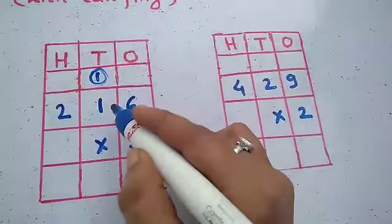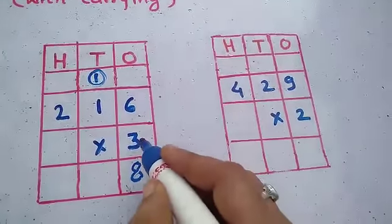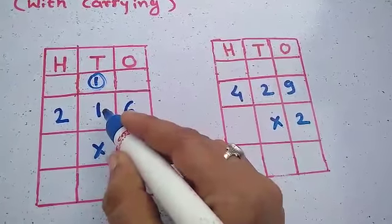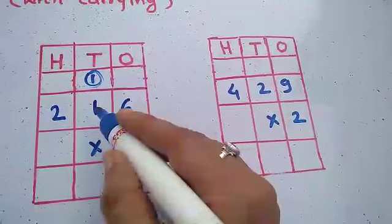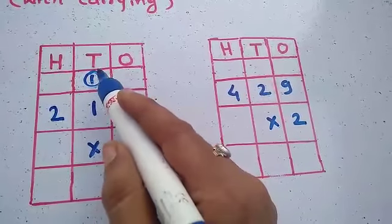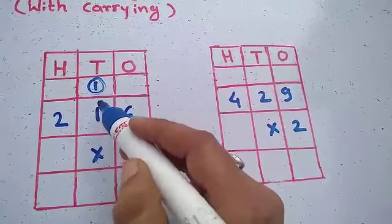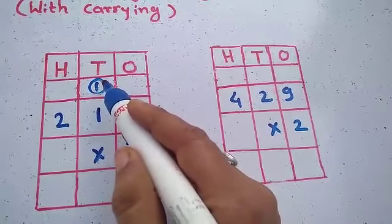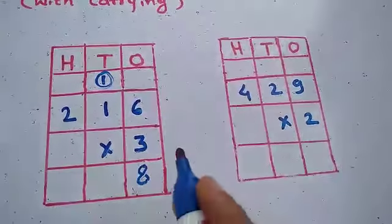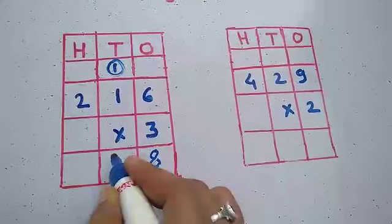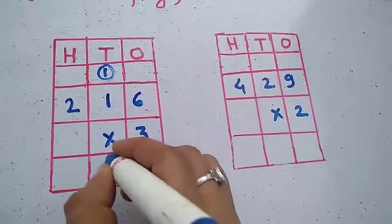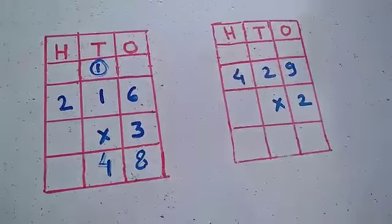Now 3 into 1. What is 3 ones are? 3 ones are 3. 3 and add 1 ten. 3 and 1 ten is equal to 4. Now so we will write here 4.